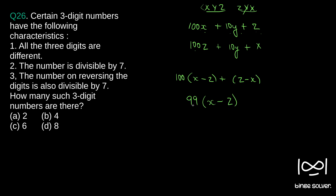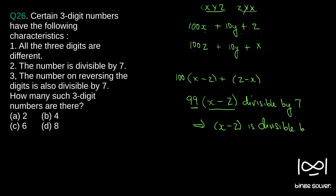So if 99(x minus z) is divisible by 7, and 99 is not divisible by 7 — dividing 99 by 7 gives remainder 1, so it is not divisible — that means since 99 is not divisible by 7, x minus z must be divisible by 7. So x minus z is divisible by 7 is the key information we have derived.